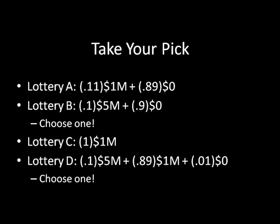Once that's done, let's move on to lottery C and lottery D. In lottery C, I give you $1 million with certainty. In lottery D, I give you $5 million with 10% probability, $1 million with 89% probability, and nothing with 1% probability. Choose which one you prefer between lottery C and lottery D.